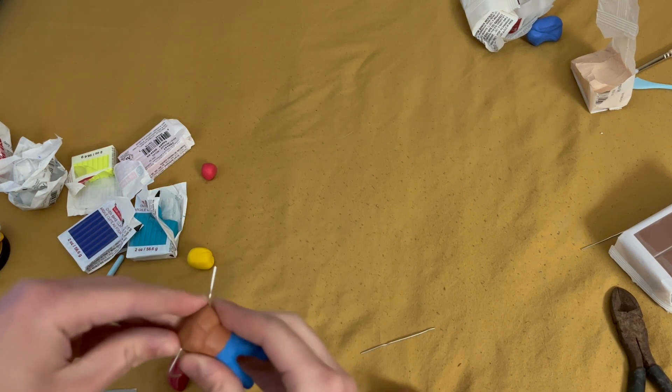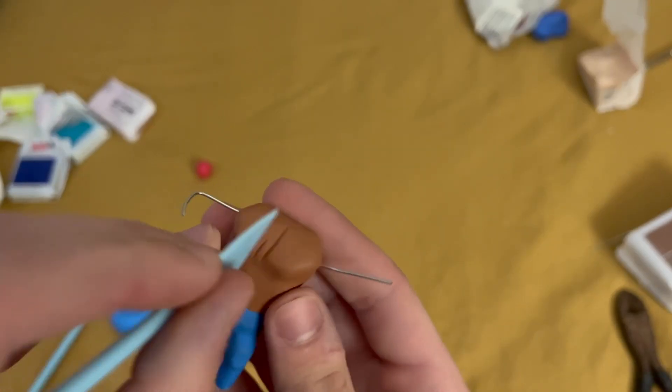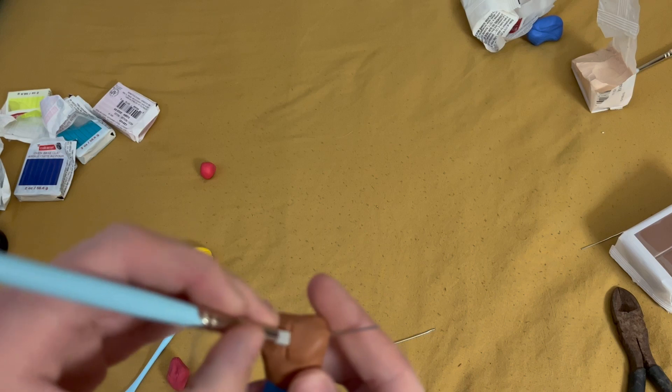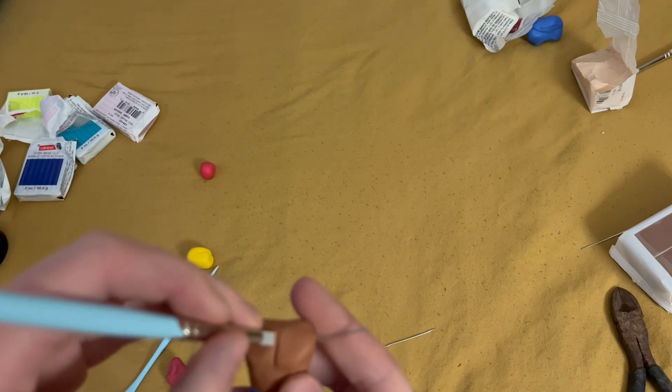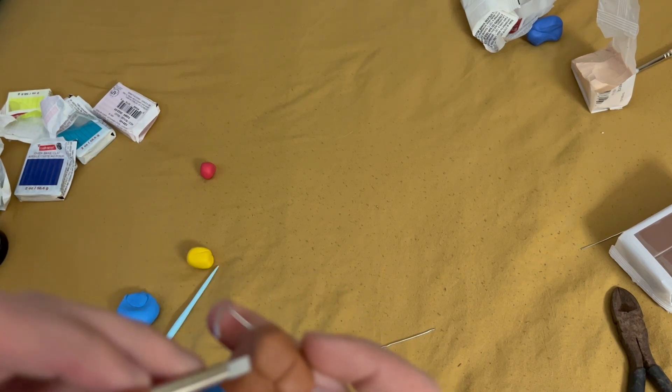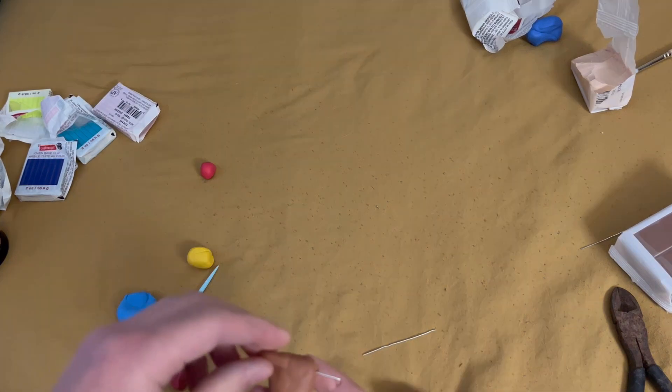Once that's done, I add some biceps to the front side of the body, blend them in, and then add a seam down the middle of the biceps. Then I make the seam look a little bit better, and then add a little mark on the bottom part of the bicep.